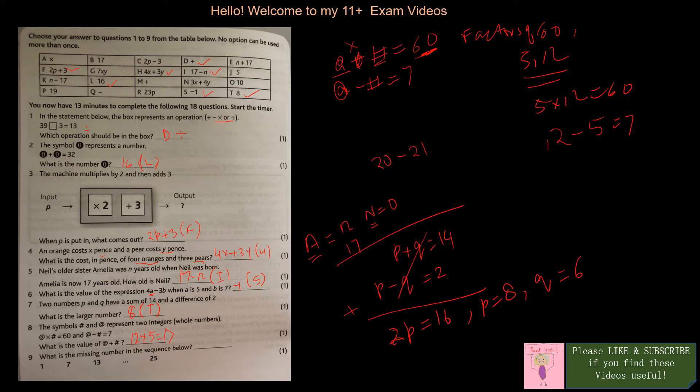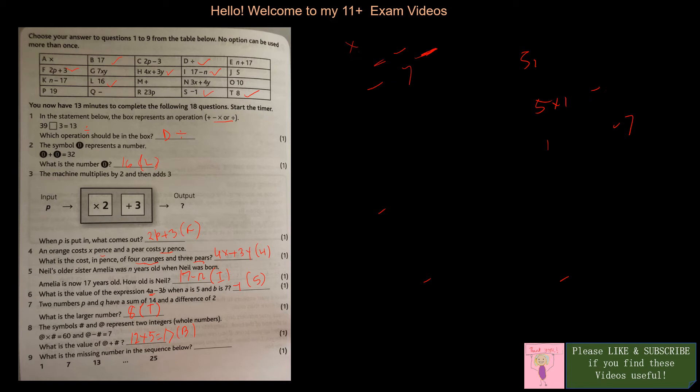What is the missing number in the sequence? We have 1, 7, 13, 25. This is 1 plus 6 is 7, 7 plus 6 is 13, so it's a difference of 6. 1 plus 6 is 7, 7 plus 6 is 13, 13 plus 6 is 19, and then 19 plus 6 is 25. So this is 19, and where is 19? It's in P.